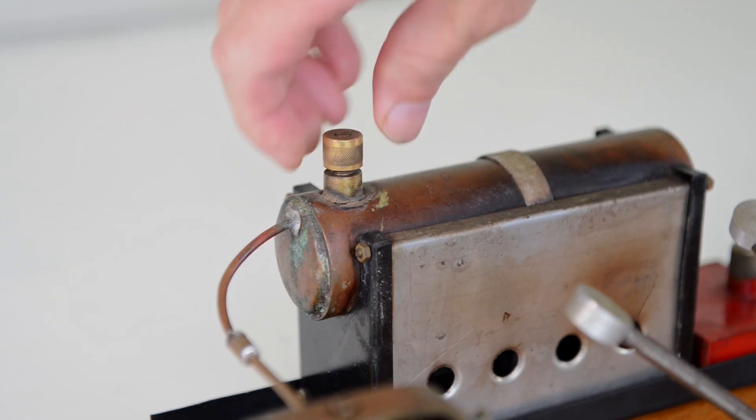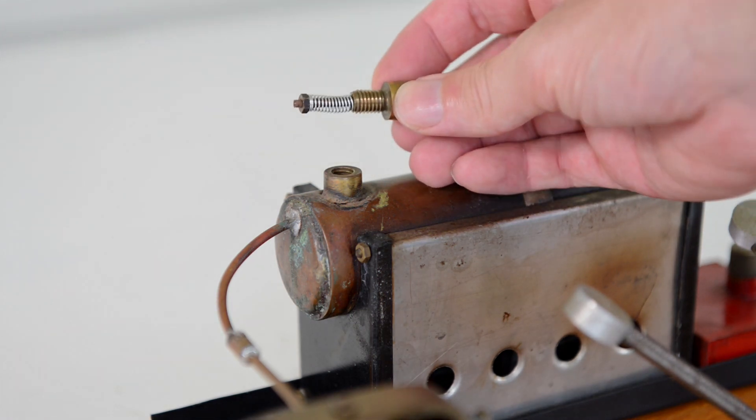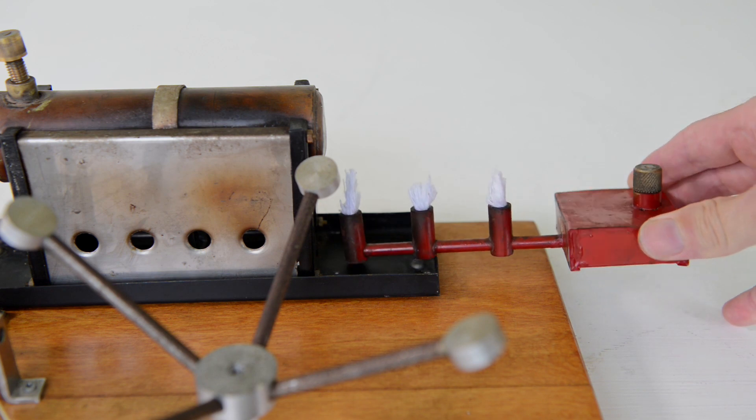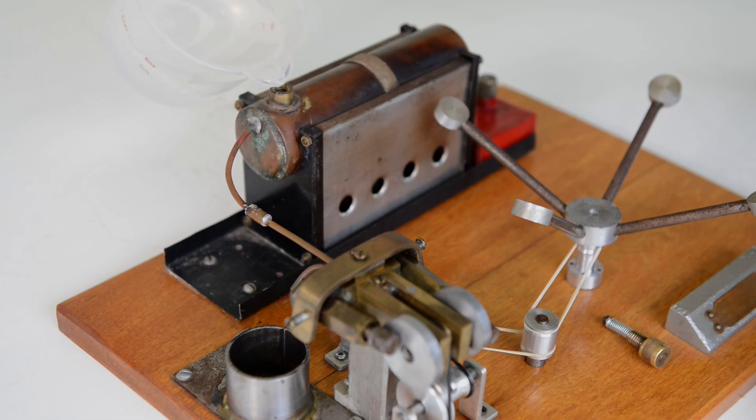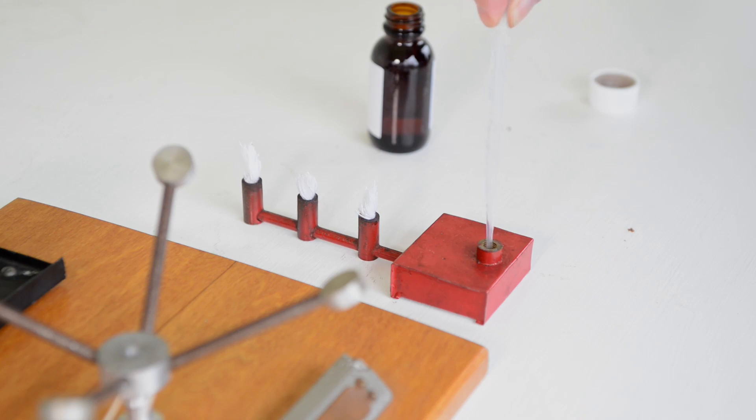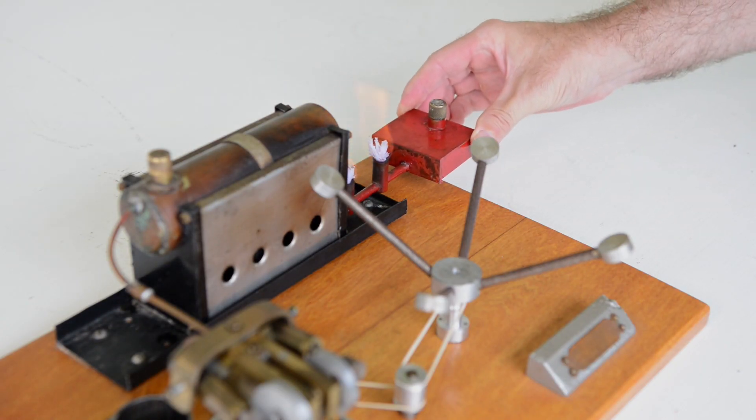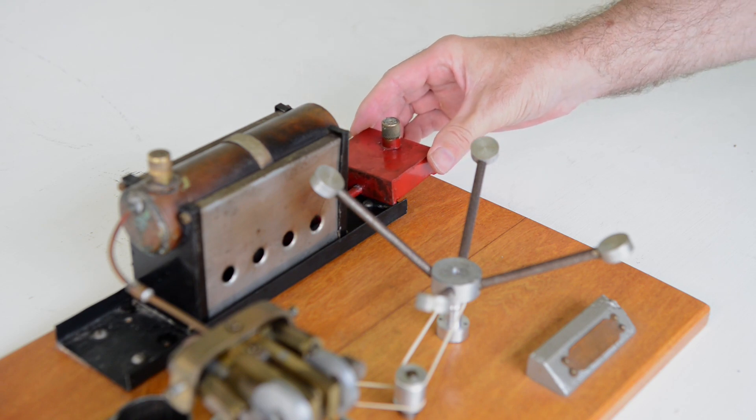So once again, I remove the safety valve cap. As you can see, I've put on a brand new stainless steel spring. I've also replaced the burner wick cotton. I refill the boiler and the burner, then I light the burner and place it back under the boiler. Fingers crossed it will actually work this time.